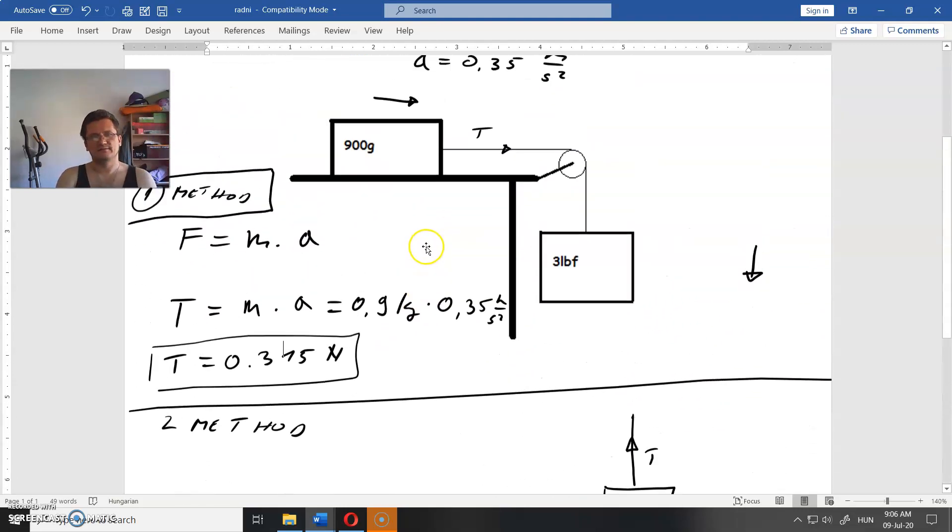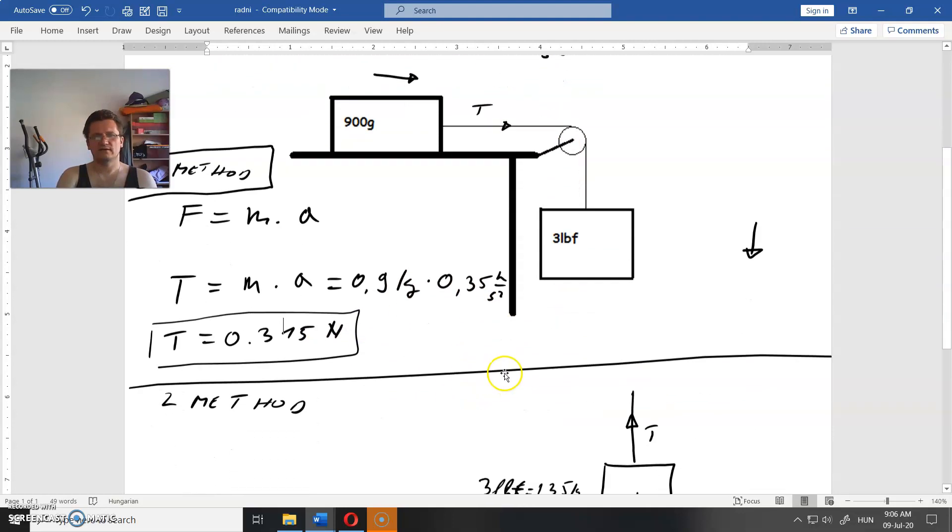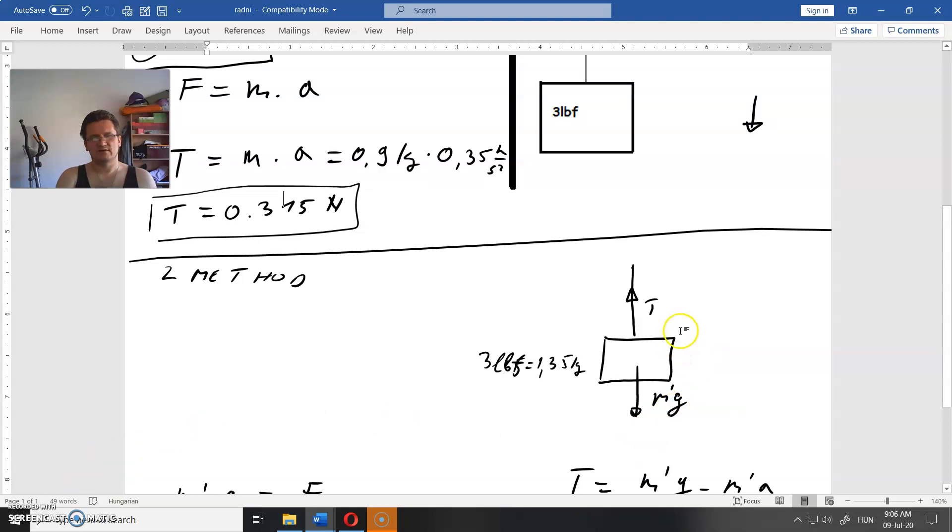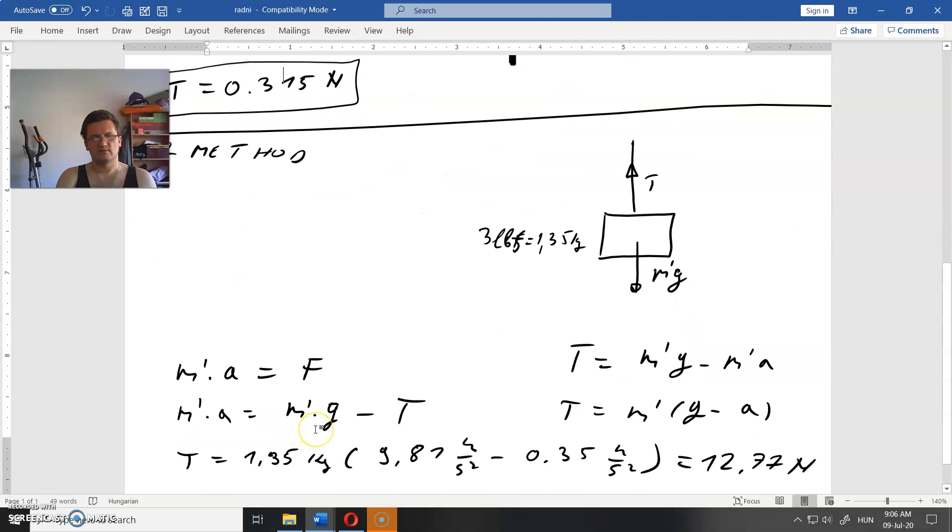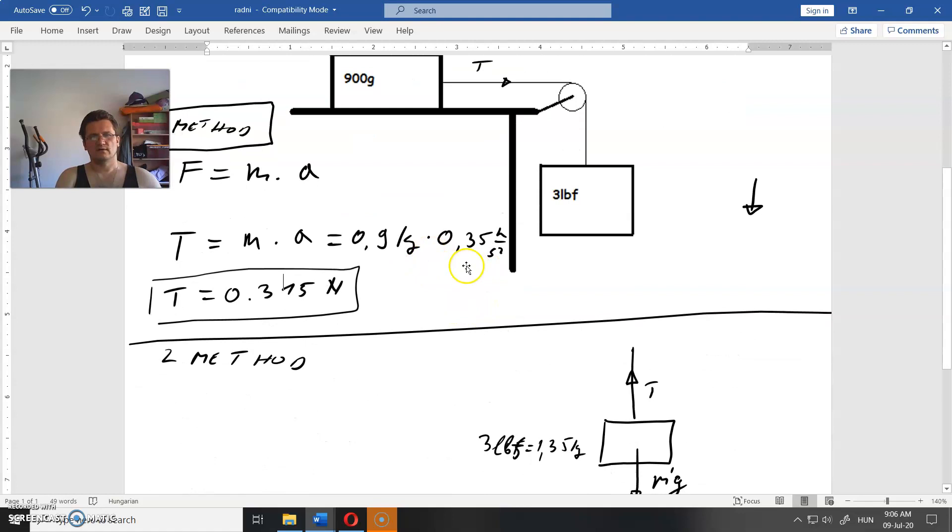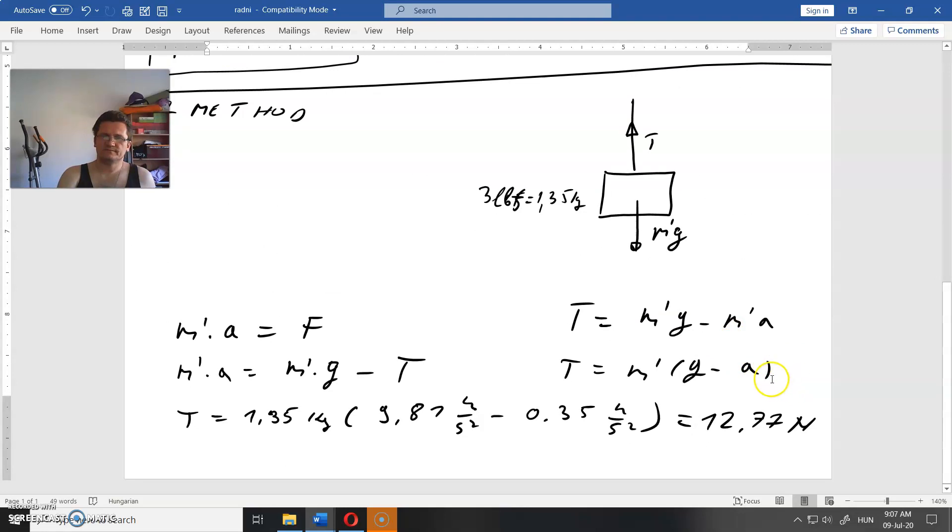What did I do wrong here? Let me see again. 0.9, 0.35, that is that. Here we have Mg minus T equals MA, that is good. What is wrong with this? Let me pause and think about it but then I will come back to it.